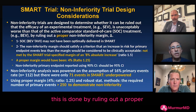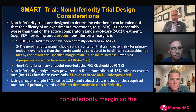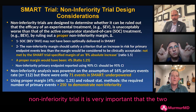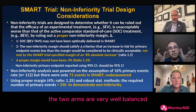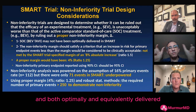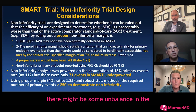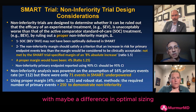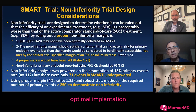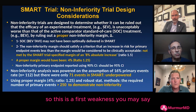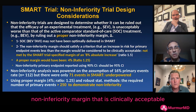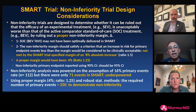This is done by ruling out a non-inferiority margin. When you have a non-inferiority trial, it is very important that the two arms are very well balanced and both optimally and equivalently delivered. As we just discussed, there might be some imbalance in the delivery of these two therapies, with perhaps a difference in optimal sizing and optimal implantation in self-expanding versus balloon-expandable.